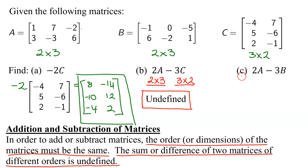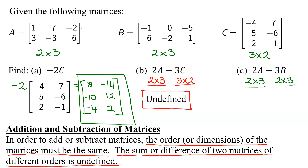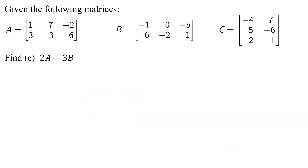Now let's look at part C to see if its answer is going to be defined or undefined. Two times matrix A is going to be a two-by-three matrix, and three times B is also going to be a two-by-three matrix. Are these dimensions the same? Yes. So I can definitely complete two A minus three B. I need some more room, so let's go on to the next slide.